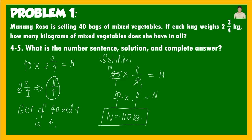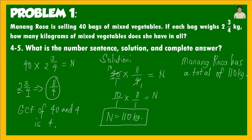Our answer is 110 kilograms. For the complete answer we write: Manang Rosa has a total of 110 kilograms of mixed vegetables.